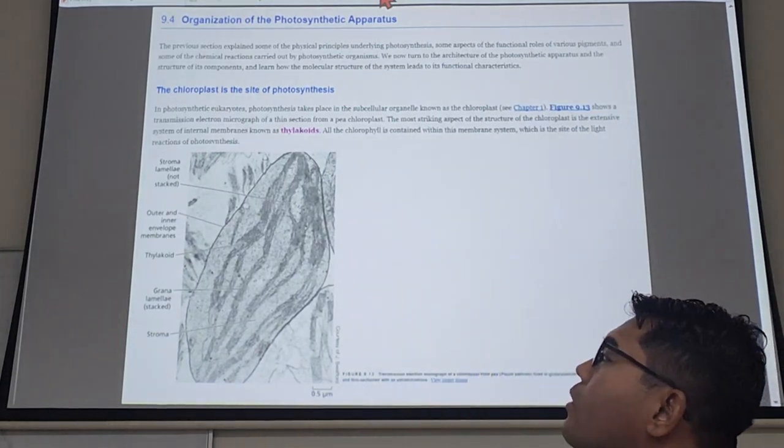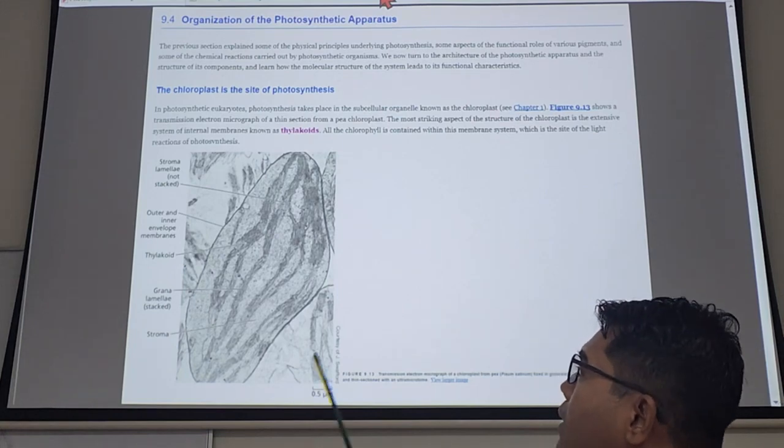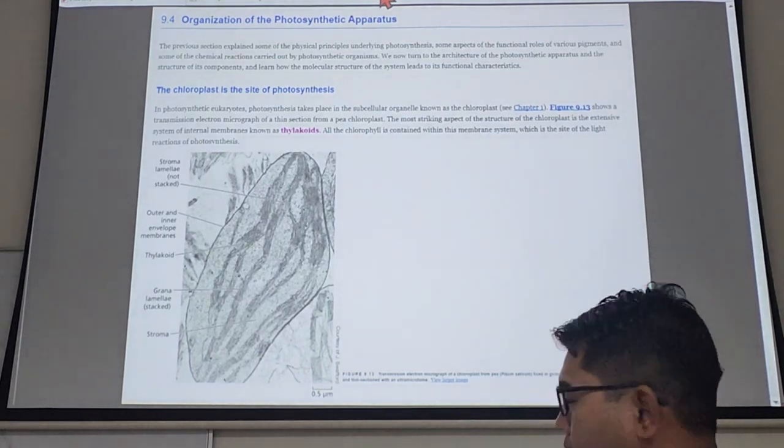So this is a cross section from electron microscope. You can see that chloroplast - why is it not green? This is electron microscope, no color.